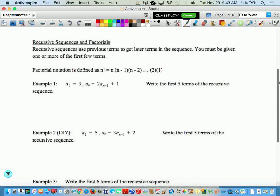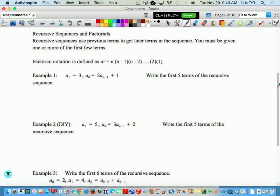So some recursive sequences and factorials. So remember, a factorial is something like 6 with the exclamation point. So right down here is the definition of it.